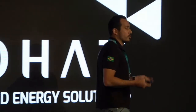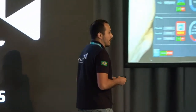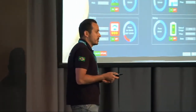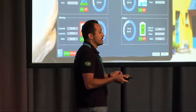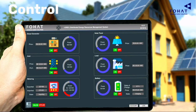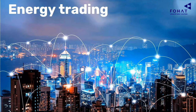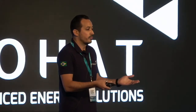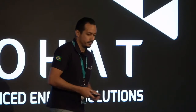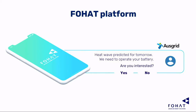Second, we need control. The energy operator and the distribution network providers should be allowed to control your device to balance the energy in the network. The third thing we need is an energy trading platform, because these assets still belong to you — it's your battery — and they should be able to pay you for the usage of your resource. Our platform integrates visibility, control, and energy trading in an interactive system to connect users and energy utilities.